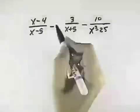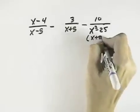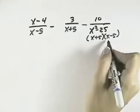We want to perform the indicated operation of subtraction, but to do that we need a common denominator. If we factor the difference of squares in the second denominator, we can see the common denominator will have two factors.